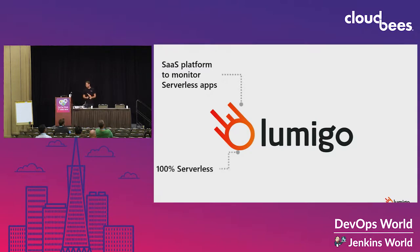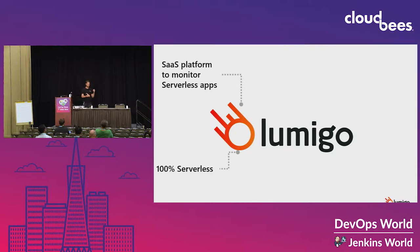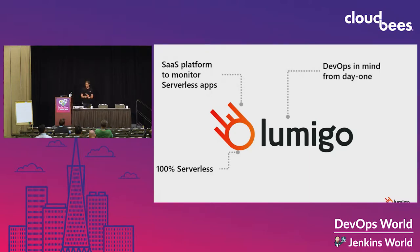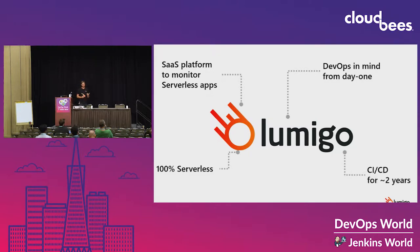We are 100% serverless in our backend — serverless with our CI/CD and with our entire backend. We are based on AWS. When I say serverless, I mean everything from API Gateway to Lambdas to SNS, SQS, DynamoDB, Kinesis, and so on. Zero VMs, zero containers. We built a system with a DevOps mindset from day one, so everything is as code, including the infrastructure. We've been doing that for the last two years and we have dozens of deployments per day to production.